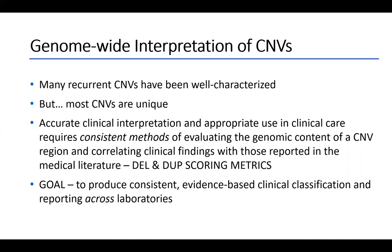Anyone who works routinely with CMV analysis knows there are many recurrent CMVs that have been well characterized, though interpretation is harder for some. Most CMVs we encounter are unique. For that reason, we need consistent methods that allow for accurate clinical interpretation and appropriate use in clinical care — evaluating the genomic content of a CMV region and correlating clinical findings with those reported in medical literature or other available resources, to make patient care easier for clinicians and patients alike.